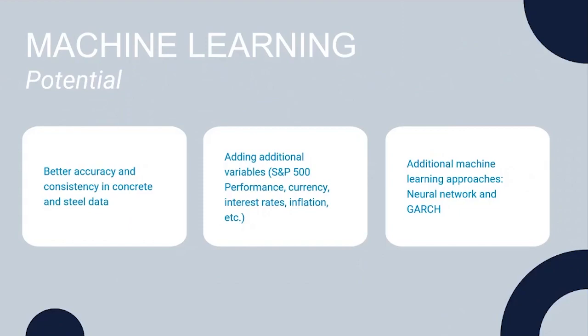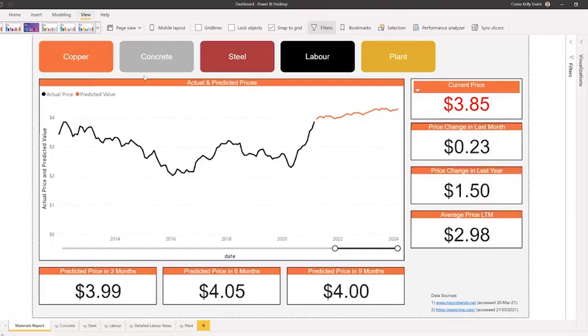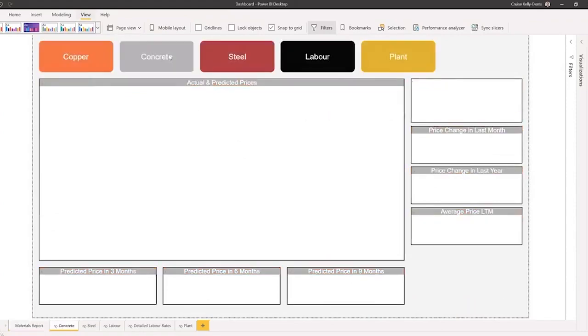This is our Power BI dashboard that we developed to showcase the data we've web scraped and our own predicted model. Here you can see a trend of past data along with our future prediction for prices of key components. This card calls out the current price and highlights it with a RAG status, depending on value for money. We also call out predicted price in set intervals and price changes over a certain period. This is repeated for other materials such as concrete and steel.